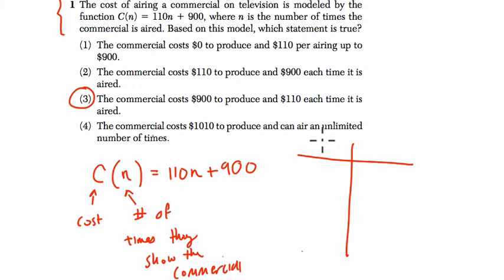The way I think about that is by setting up a table where we have n as the number of times aired and C(n), which is the cost based on how many times we've aired the commercial. Now if I plug in zero for n, I get 110 times zero, which is zero, plus 900, which equals 900.